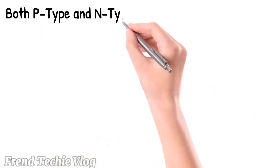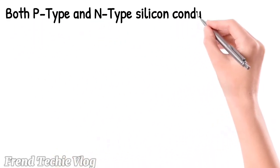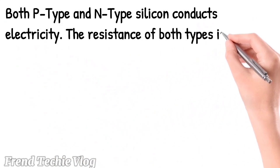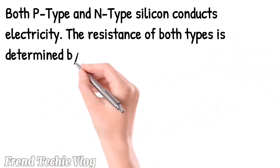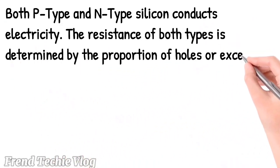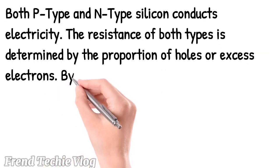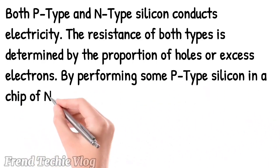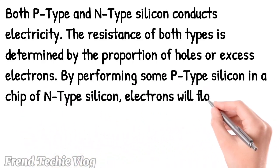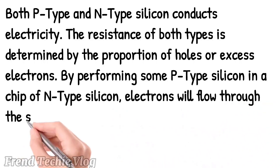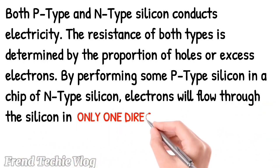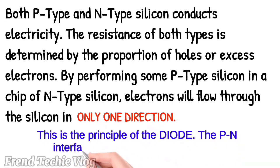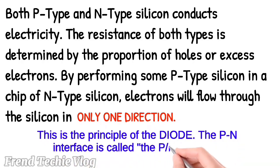Both P-type and N-type silicon conduct electricity. The resistance of both types is determined by the proportion of holes or excess electrons. By embedding some P-type silicon in a chip of N-type silicon, electrons will flow through the silicon in only one direction. This is the principle of the diode. The P-N interface is called the P-N junction.